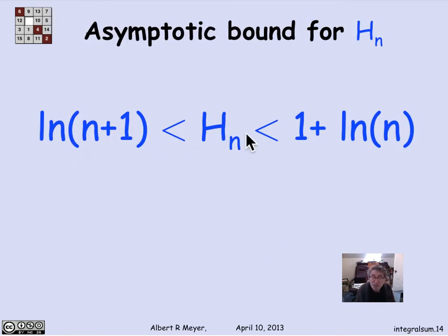So combining those two bounds that I got by looking at a curve that's a lower bound on the area and a curve that's an upper bound on the area and integrating, I discovered that H_n is bracketed between the natural log of n plus 1 and 1 plus the natural log of n. Now these two numbers, log of n plus 1 and 1 plus log of n, are very close. And they get closer and closer as n grows. So it turns out that what we can say pretty accurately is that H_n is asymptotically equal to log n. It's approximately equal to log n.